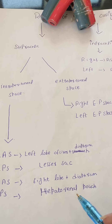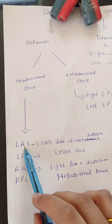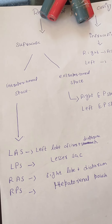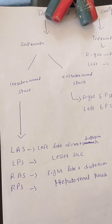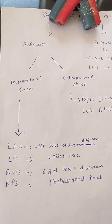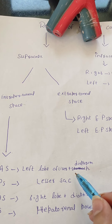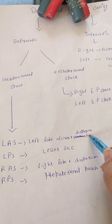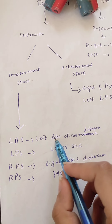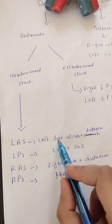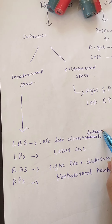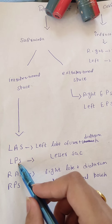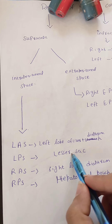The left anterior space is formed between the left lobe of the liver and the diaphragm, on the left hypochondrium side. The intraperitoneal spaces are formed between the peritoneal reflections of the liver and the diaphragm — the ligaments from the diaphragm give attachment to the liver. So the left anterior space is between the left lobe of liver and diaphragm. The left posterior space is the lesser sac, which lies posteriorly behind the right free margin of the lesser omentum.